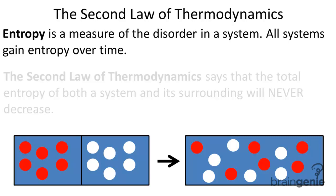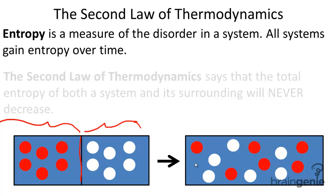Let's take the example of two different gases separated by a partition, or in two separate containers. So we have a red gas and we have a white gas, and they're separated by a partition. Let's say we remove this partition and get rid of it. Now the two gases have mixed into one single container.